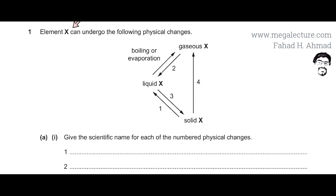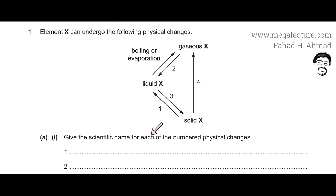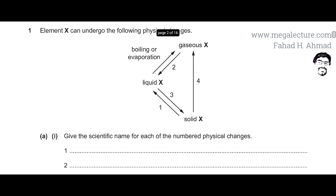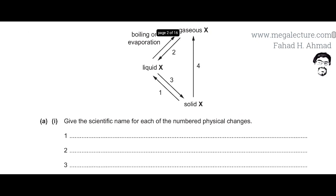The question states that element X undergoes the following physical changes. There are three states: gaseous, solid, and liquid. In the first part, you have to give the scientific name for each of the numbered physical changes. Number one is the change from solid to liquid, and solid to liquid is melting.